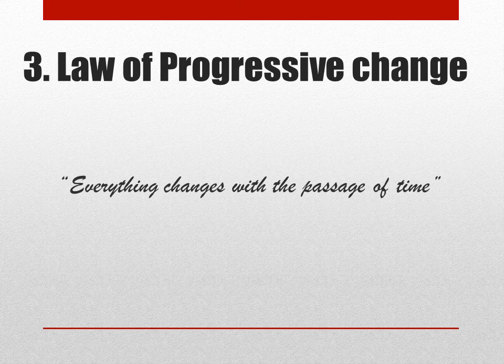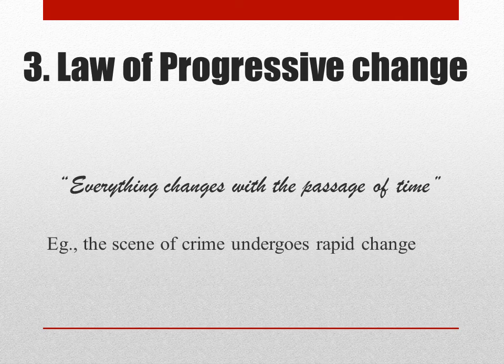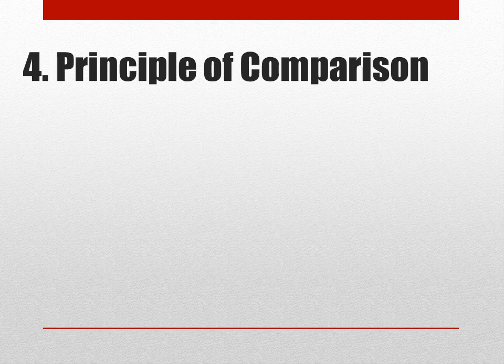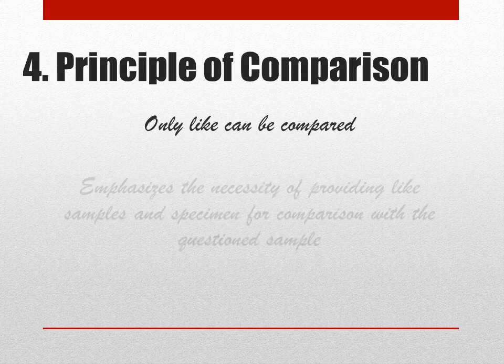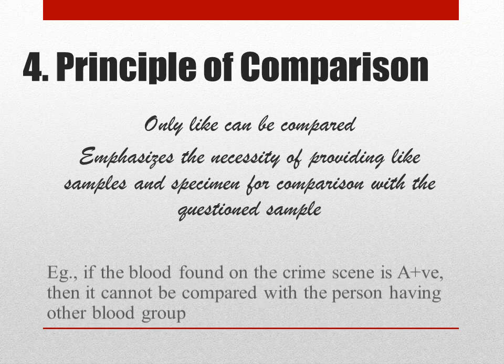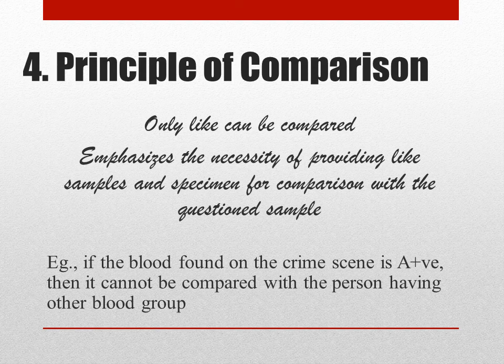Principle of Comparison: Only like can be compared. It emphasizes the necessity of providing like samples and specimens for comparison with the questioned sample. For example, if the blood found at the crime scene is A positive, then it cannot be compared with a person having other blood groups.